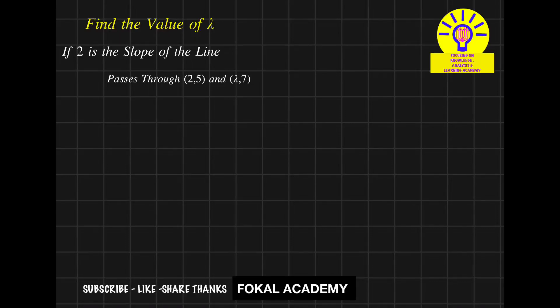Hi everyone, welcome to Fokal Academy. See this problem: how to find the value of lambda when the slope is given as 2 for two points. In these two points, one point's x-coordinate value is missing—that is lambda. How can you find that lambda value?